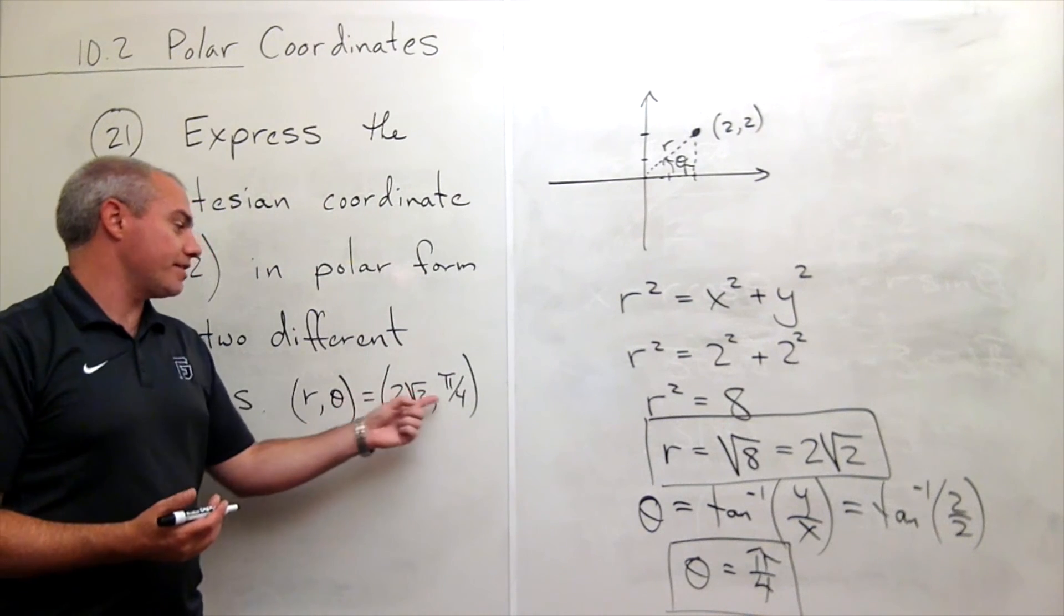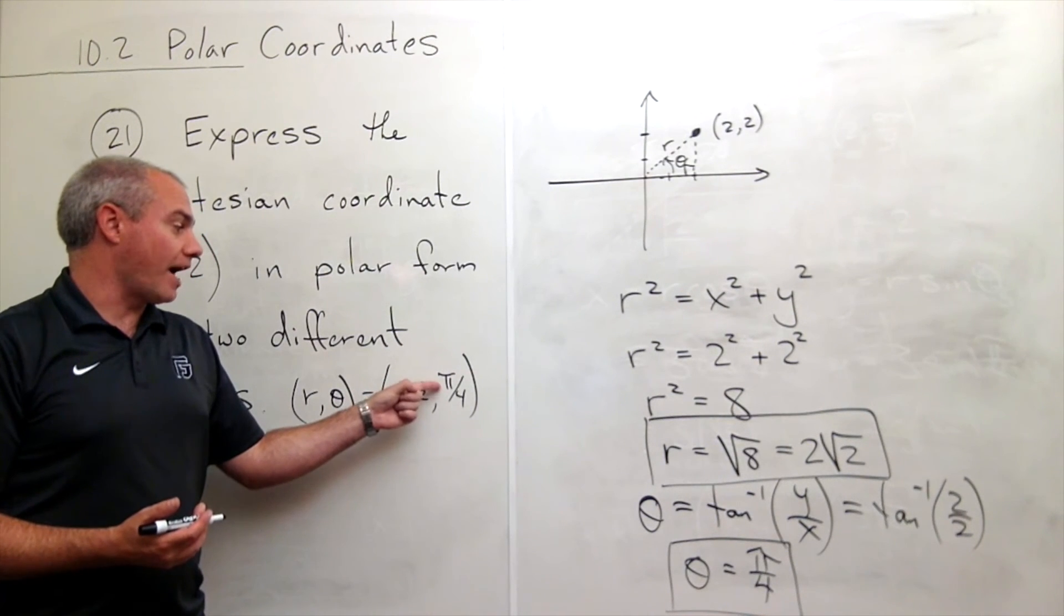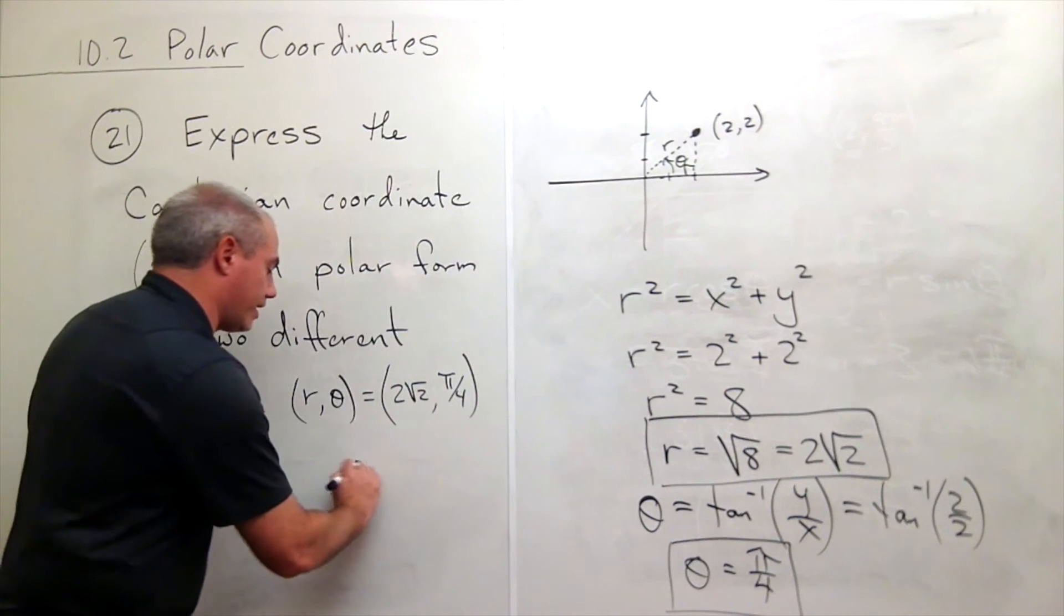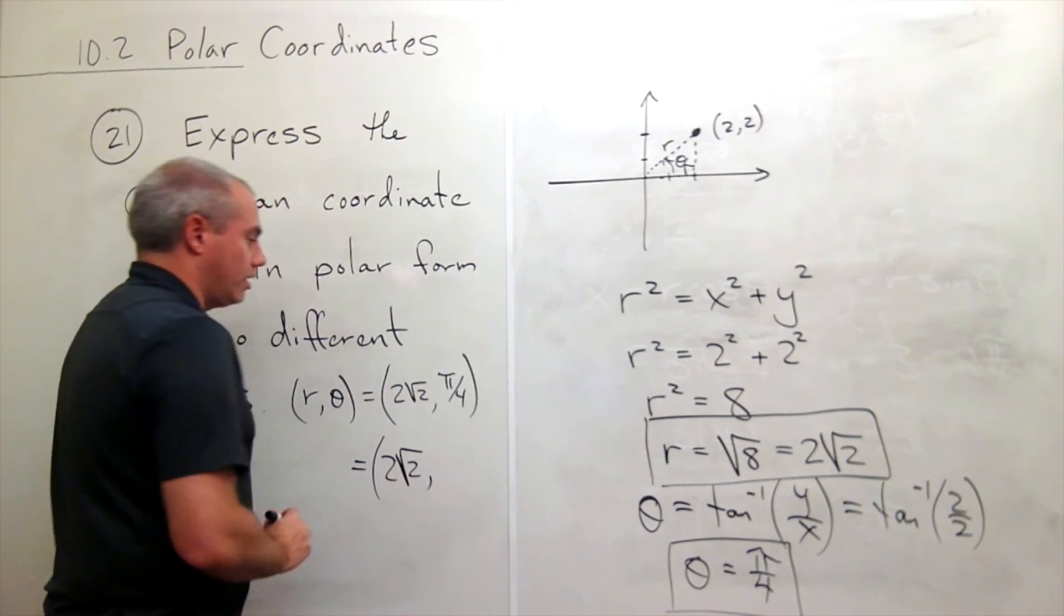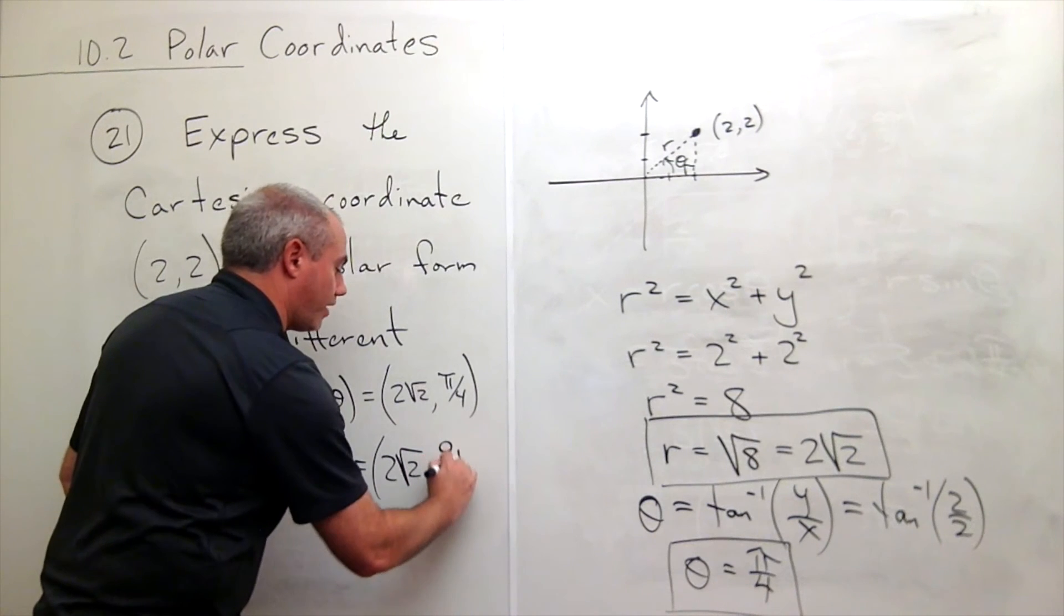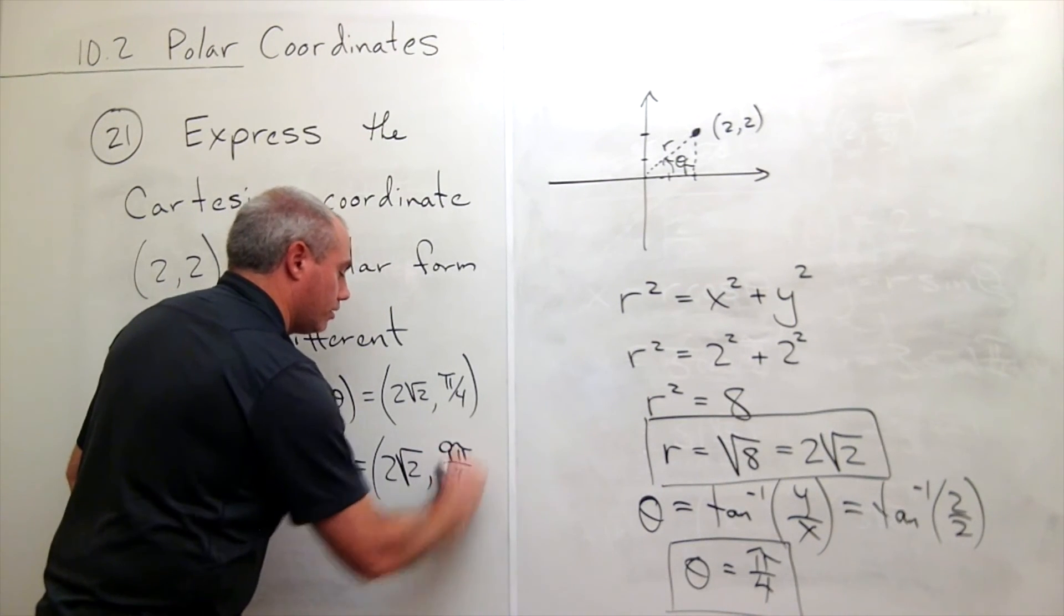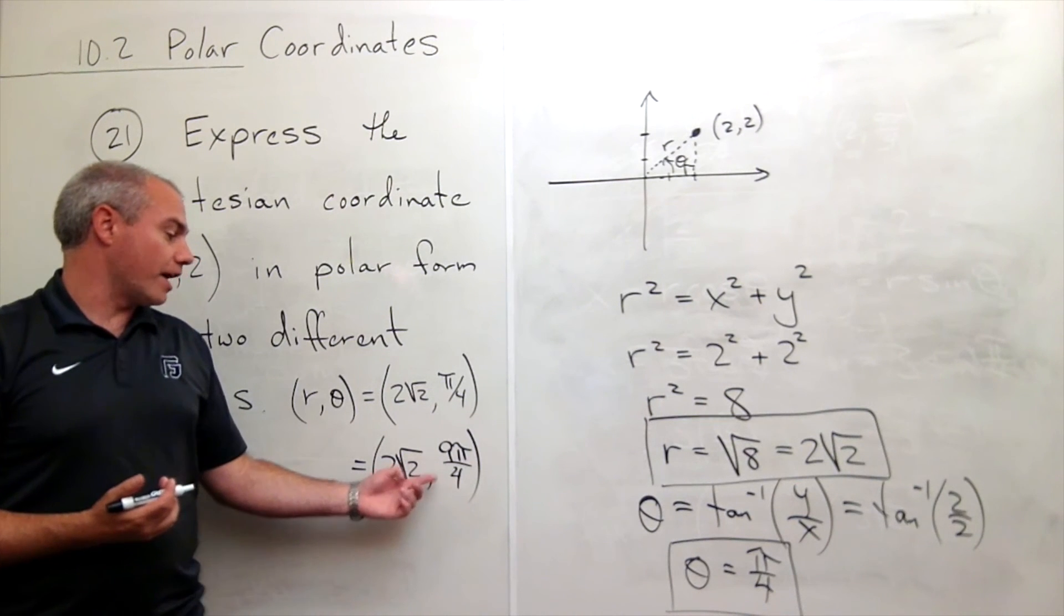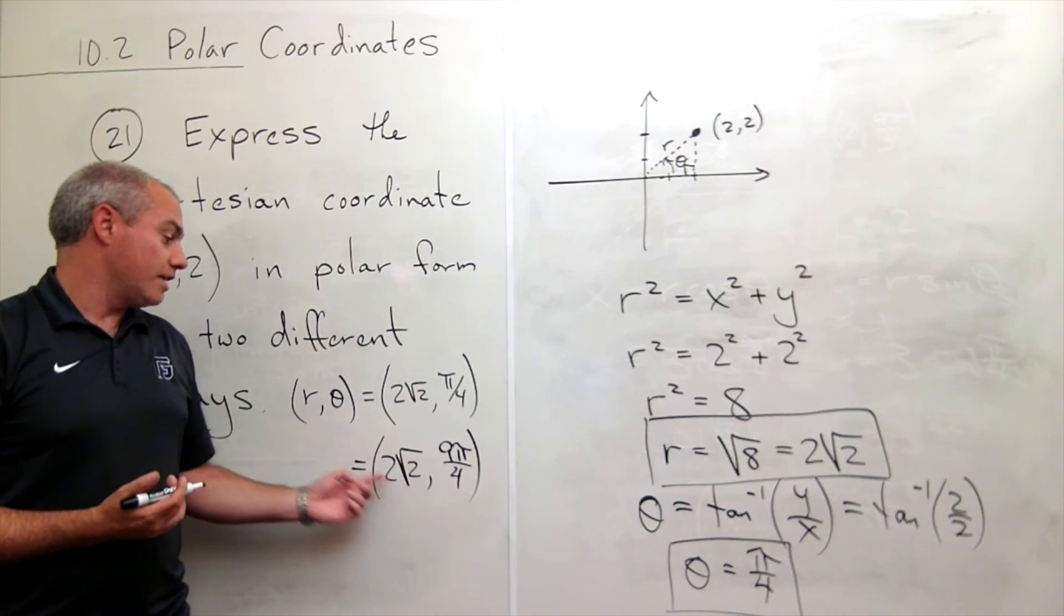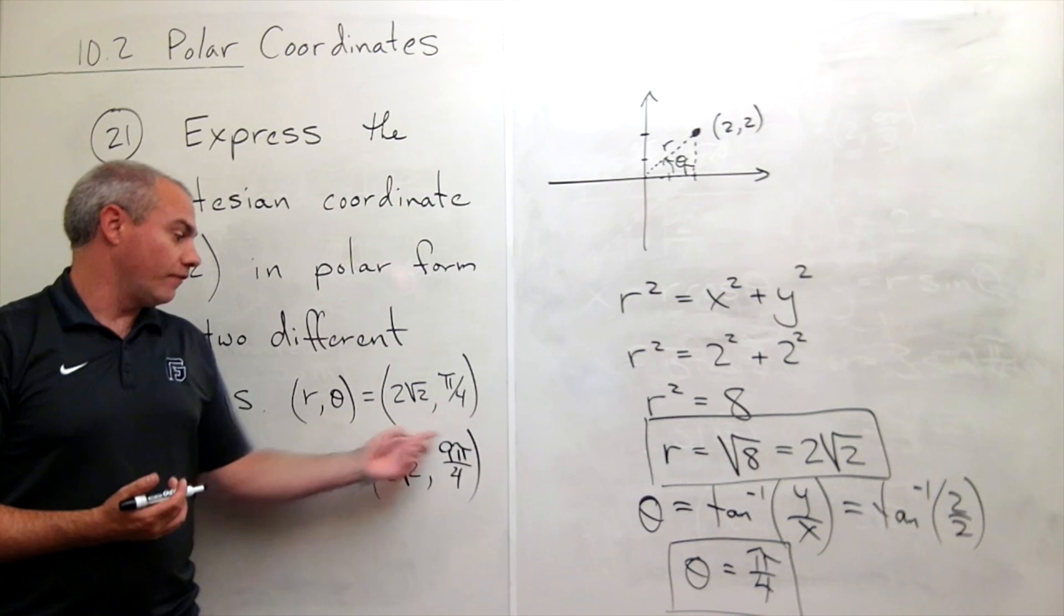A way that I could represent it other than this is I could add 2π to this and write it as (2√2, 9π/4). That would be a second way. Another way is I could write negative 2√2, 5π/4.